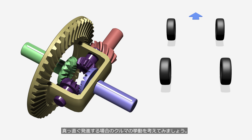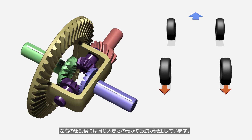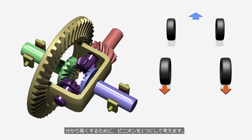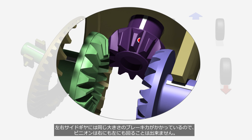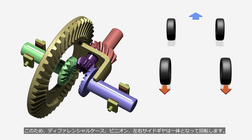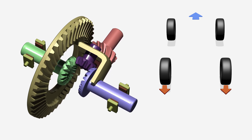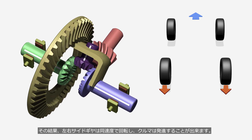The side gears connected to the left and right wheels mesh with the pinions. When starting straight ahead, the left and right tires are subject to the same amount of rolling resistance — the same braking force is applied to both side gears. Since the same braking force is applied to each side, the pinion cannot rotate either left or right. Therefore, the differential carrier, pinion, and left and right side gears rotate together as a single unit, and the left and right side gears rotate at the same speed, allowing the vehicle to move off.